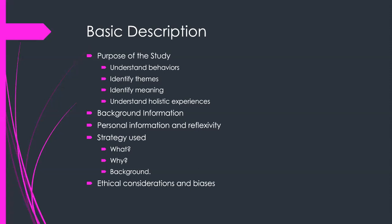In addition to the purpose and background information, we're also going to want to know personal information about the researchers. This differs from a quantitative study in that with a qualitative study, we want to know any biases the researchers may have — biases based on the way they interpret information, prior experiences, and their cultural understanding and upbringing. When we look at all those factors and how they can impact the collection and interpretation of data, we call that reflexivity. The researchers should make comments about reflexivity and any biases that occurred, as well as discuss how biases were minimized and how they may have impacted the results.